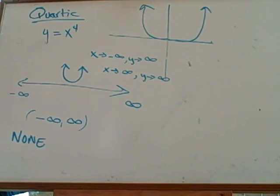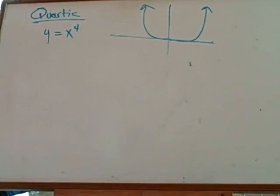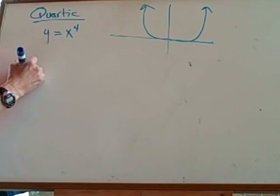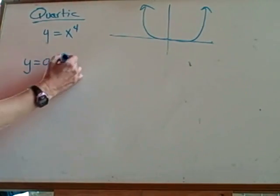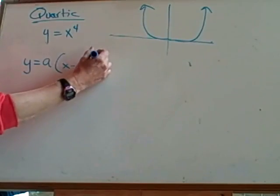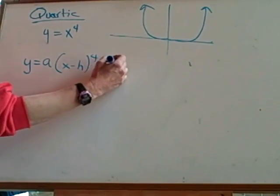Alternate forms of the equation. There are a couple of them this time. Your first one is going to be the one you would be most familiar with: a, parenthesis, x minus h, quantity raised to the fourth, plus k.